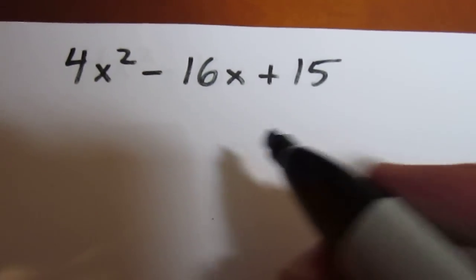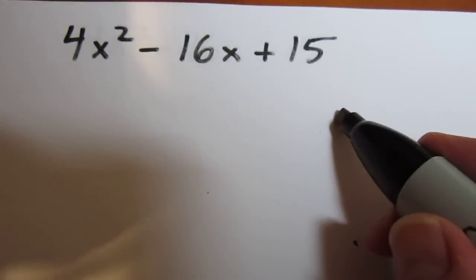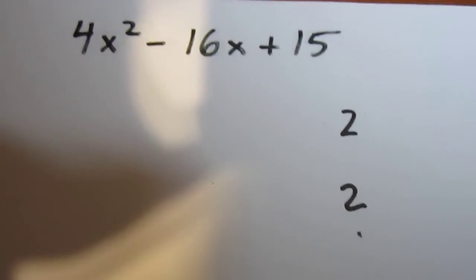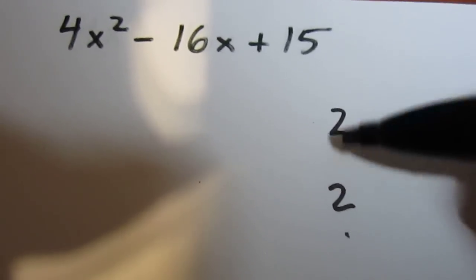We want two numbers that multiply to 4. Well, probably we're going to try 2 and 2. We could try 4 and 1, but we'll try 2 and 2 for now. We usually like to try the options that are closest together.